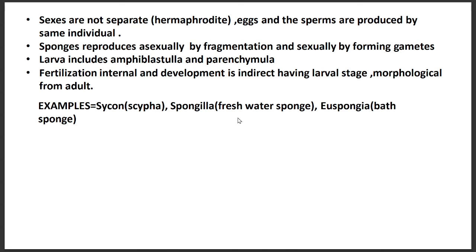Fertilization occurs internally, inside the body, and development takes place through the larva stage via metamorphosis. Examples include Sycon (commonly called Scypha), Spongilla (known as freshwater sponge), and Euspongia (called bath sponge), which was widely used for bathing in earlier times.